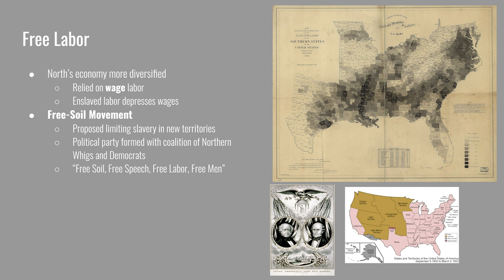The North was starting to take an economic stance against slavery. The free soil movement proposed to limit slavery in the new territories won from the Mexican-American War and negotiated from the treaty with Britain over Oregon in 1846. It evolved into a political party with a coalition of Northern Whigs and Democrats. They nominated former President Martin Van Buren in the 1848 election, and their slogan was 'free soil, free speech, free labor, and free men.' The map on the screen shows the concentration of enslaved people — mostly along the Mississippi River Valley, expanding toward Texas — and the Free Soil Party was trying to stop that westward movement.